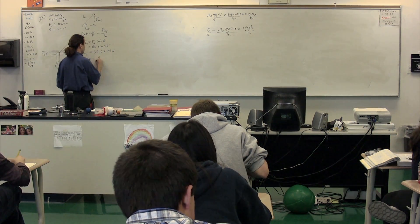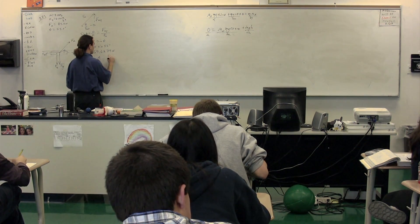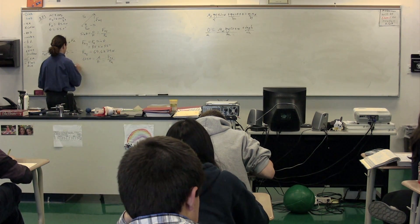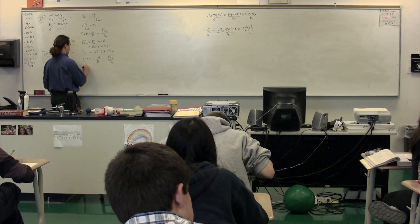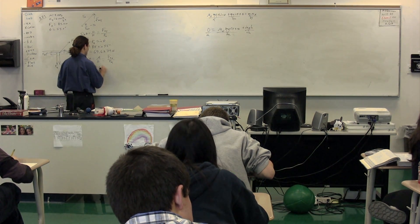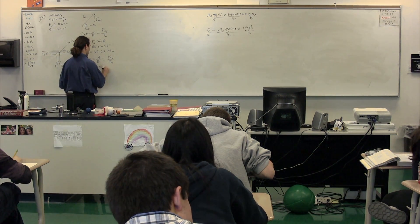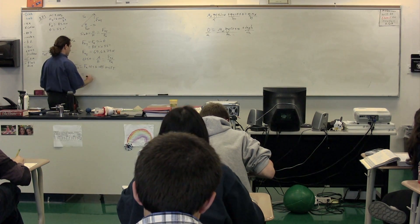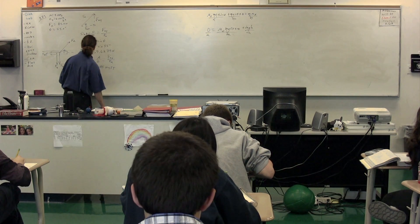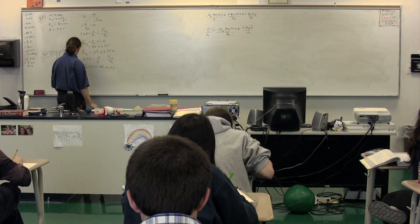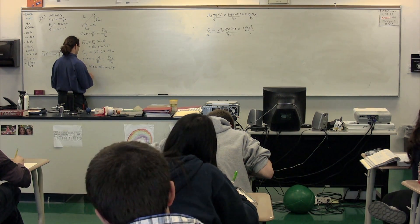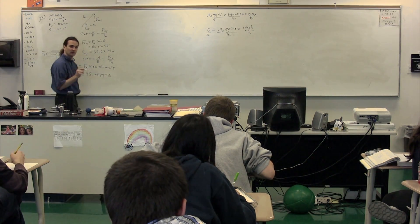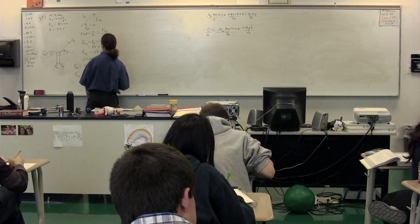We can do the same thing with cosine. Cosine theta equals adjacent over hypotenuse, so the force applied in the x-direction over the force applied. Therefore the force applied in the x-direction equals the force applied times the cosine of theta, or 85 times the cosine of 55 degrees, which gives 48.75 newtons.